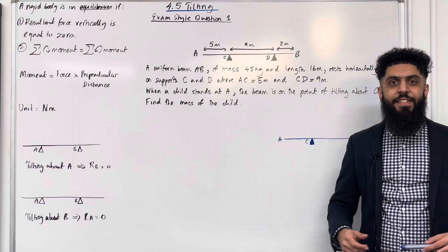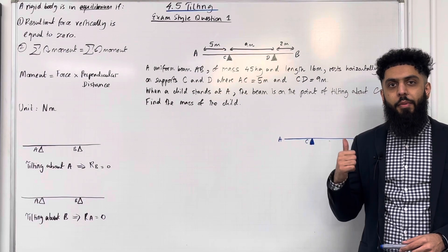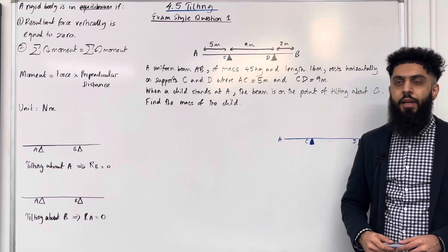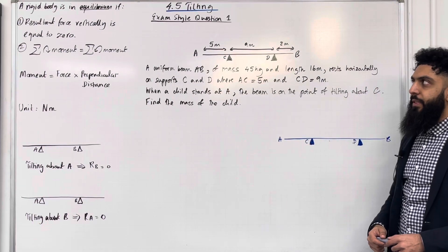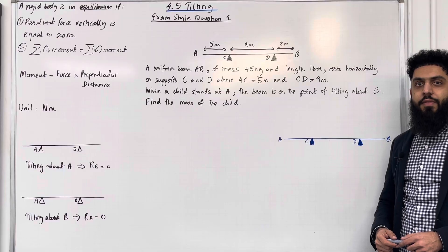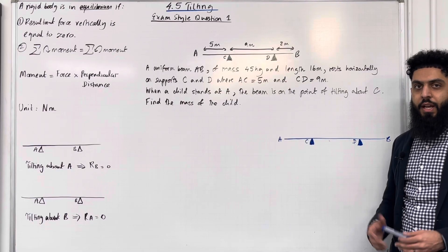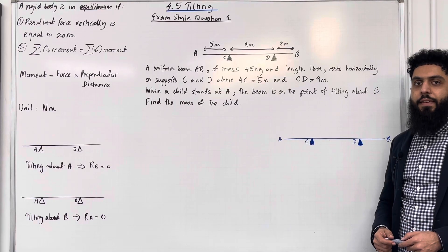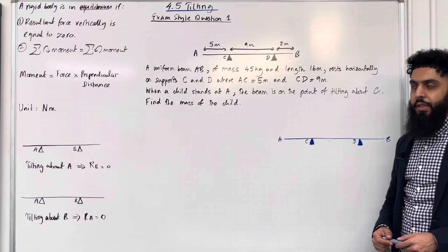Welcome back. In this YouTube video, I'll be looking at 4.5 Tilting. 4.5 represents Chapter 4, Section 5 of the Pearson A-Level Maths Applied Year 2 textbook. Let's go through the key facts of this section.